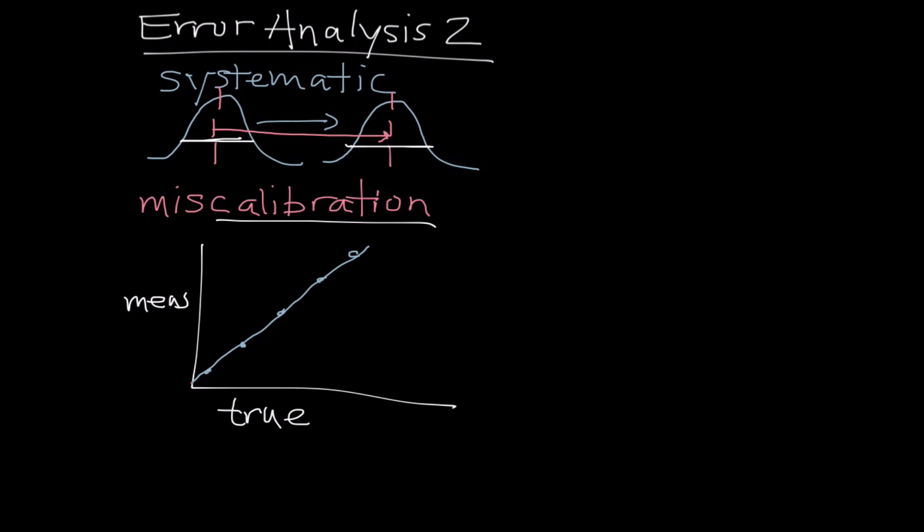So on the one hand, the slope could be wrong. So in other words, as we increment the true value, the increment that we see in the measured values is not correct. The slope could be fine, but all of the values could be shifted upward or downward. In this case, I've drawn them shifted upward. And in this case, all of our measured values are going to be larger, systematically larger, in fact, than the true values will be.